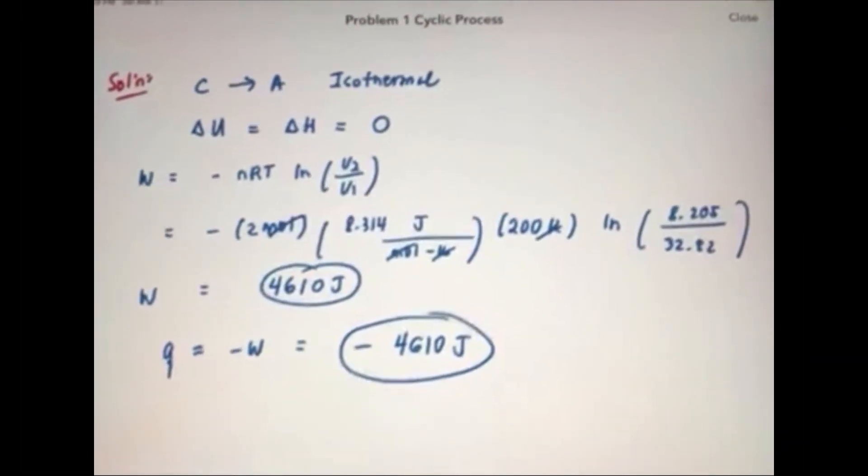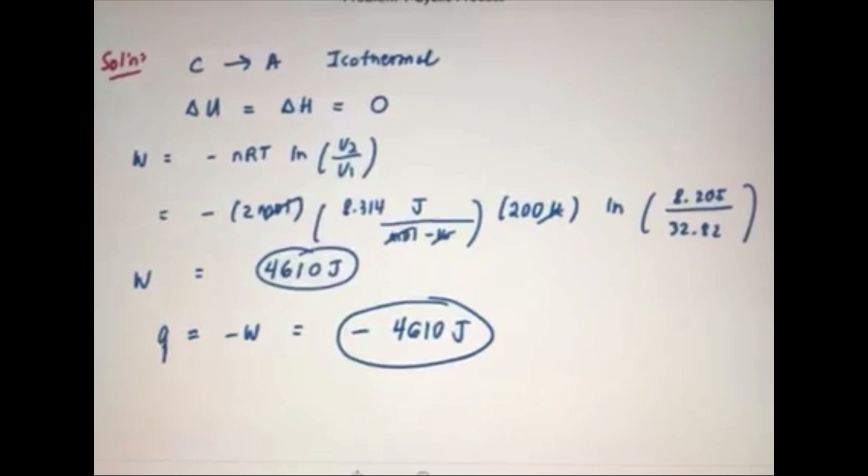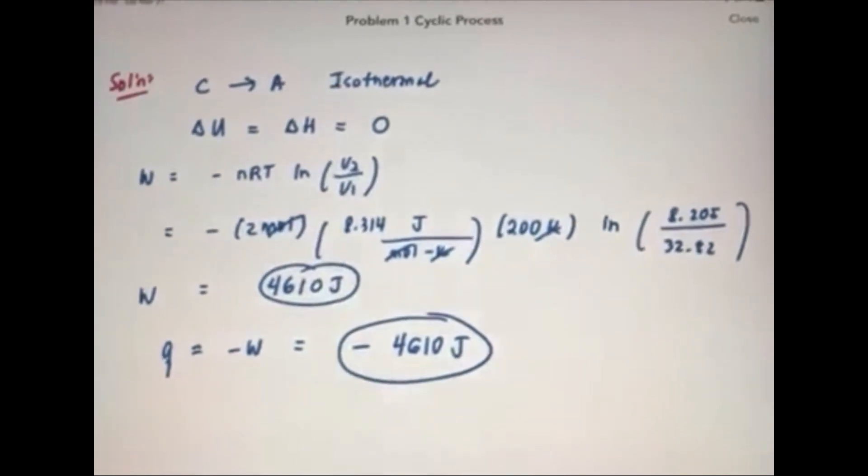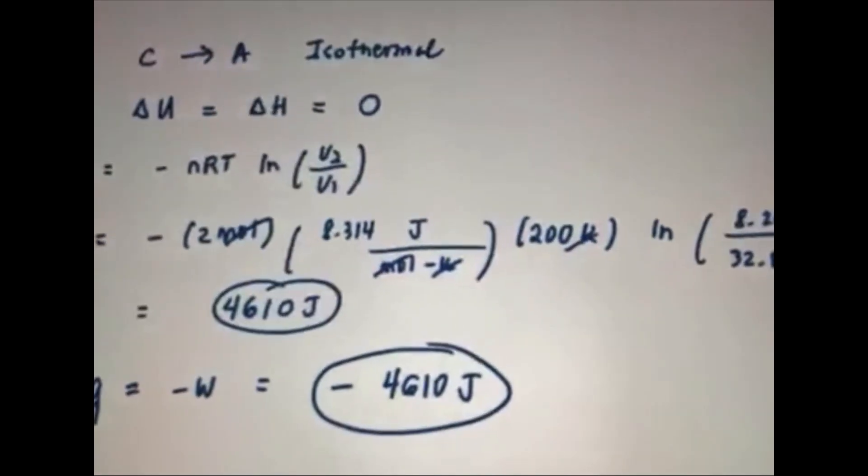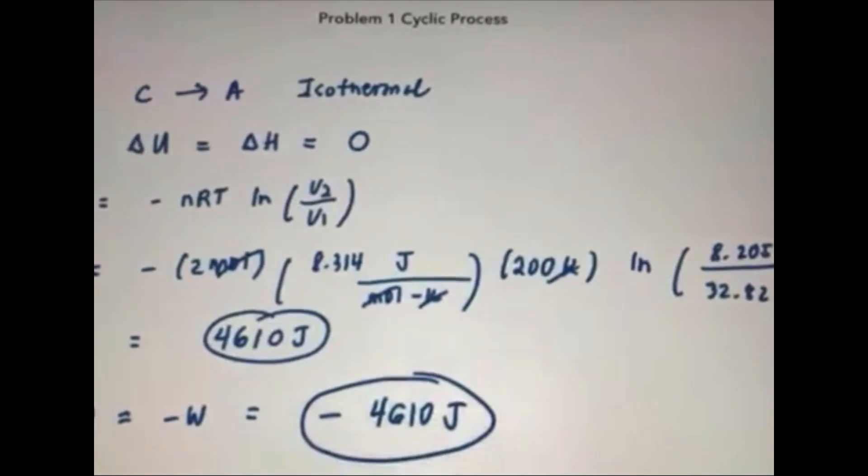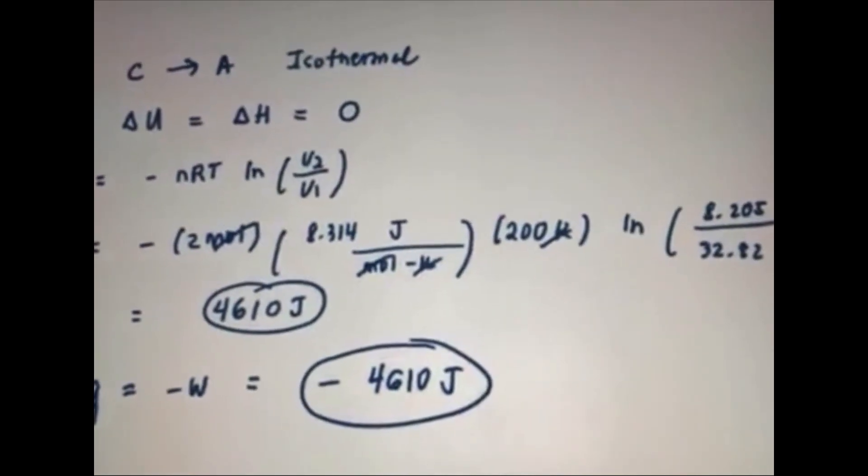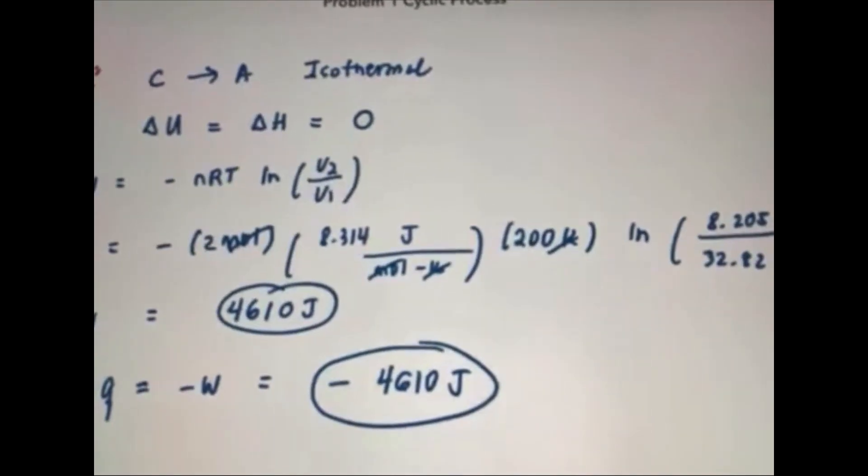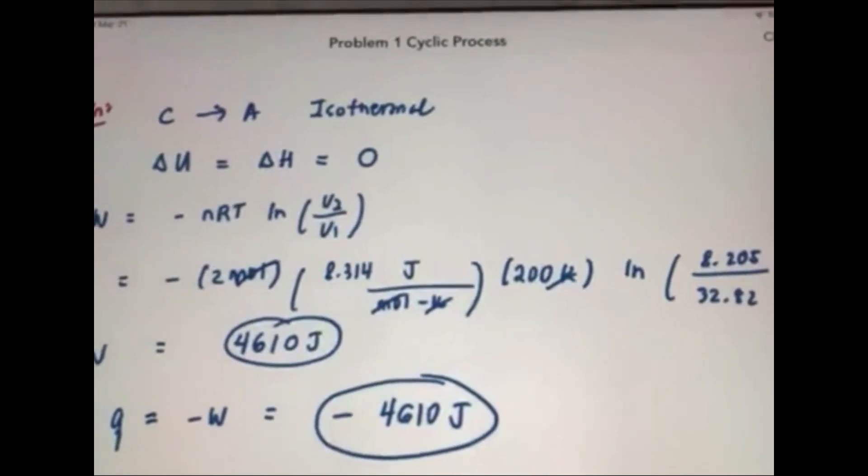For the last process, steps c to a, we have an isothermal process. So we know that for an isothermal process, delta u is equal to delta h, which is equal to 0. Since it's a reversible isothermal process, work is equal to negative nRT ln V2 over V1. Substituting negative 2 times 8.314 times 200 times ln V2 over V1, we will be getting 4,610 joules. Keep in mind that we got a positive work for W since we are compressing the gas to its original state. And q is equal to negative work, which is equivalent to negative 4,610 joules.